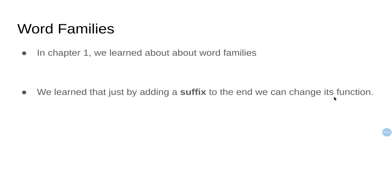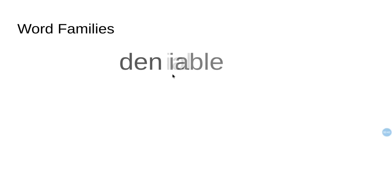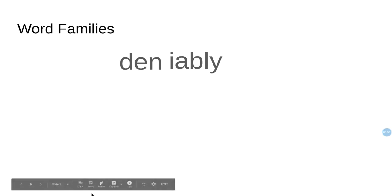To review, one of the examples we had was 'deny' — it's a verb. If we add the suffix '-al,' it becomes 'denial,' a noun. If we add the suffix '-able,' it becomes 'deniable,' an adjective. And if we add '-ly,' it becomes 'deniably,' an adverb. Suffixes occur at the end of a word.